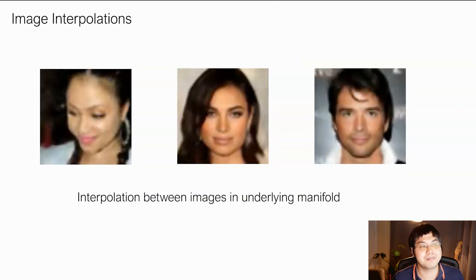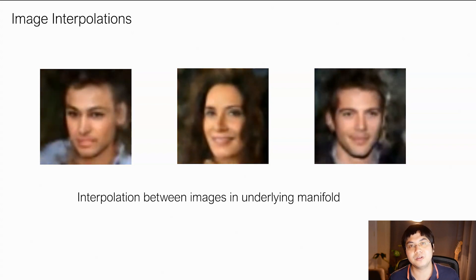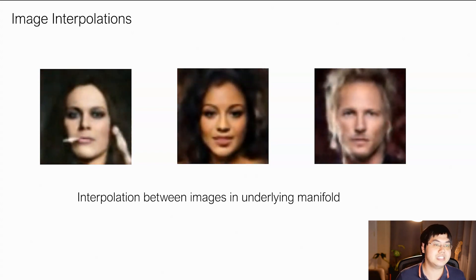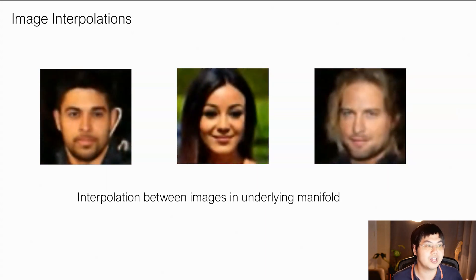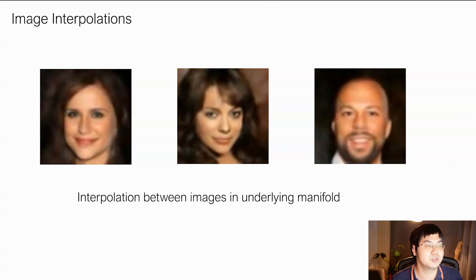We can also walk along the underlying manifold defined by our approach. What we can do is we can take a latent in our manifold and successfully interpolate between different nearest neighbors. And as we can see here, this enables us to walk along the image manifold and have perceptually consistent transitions between different samples.